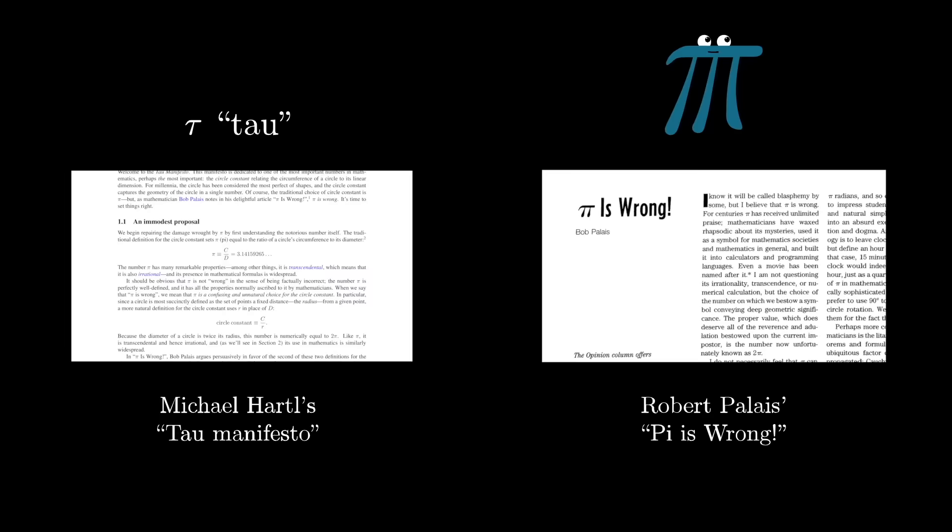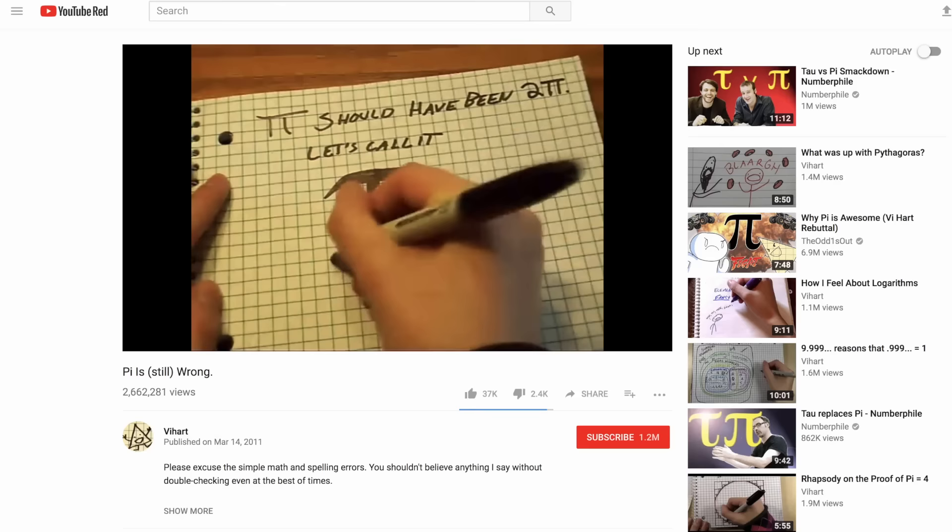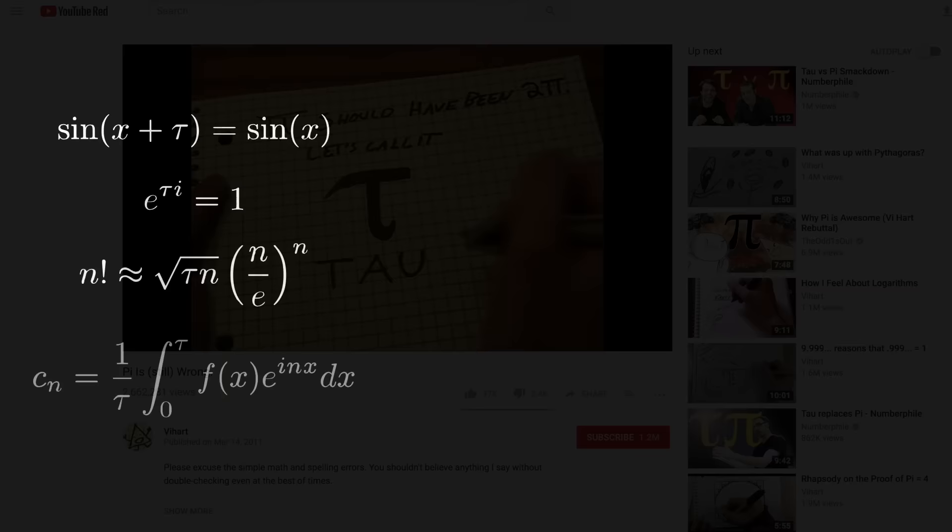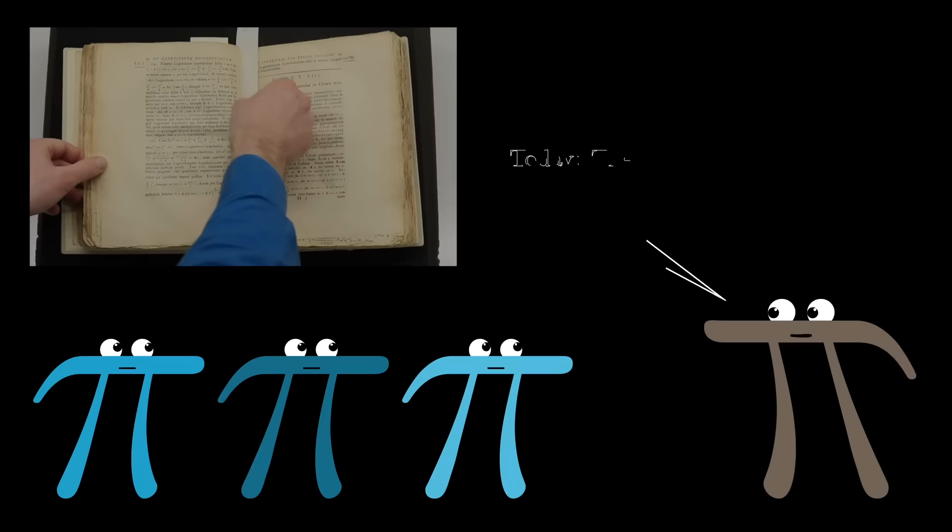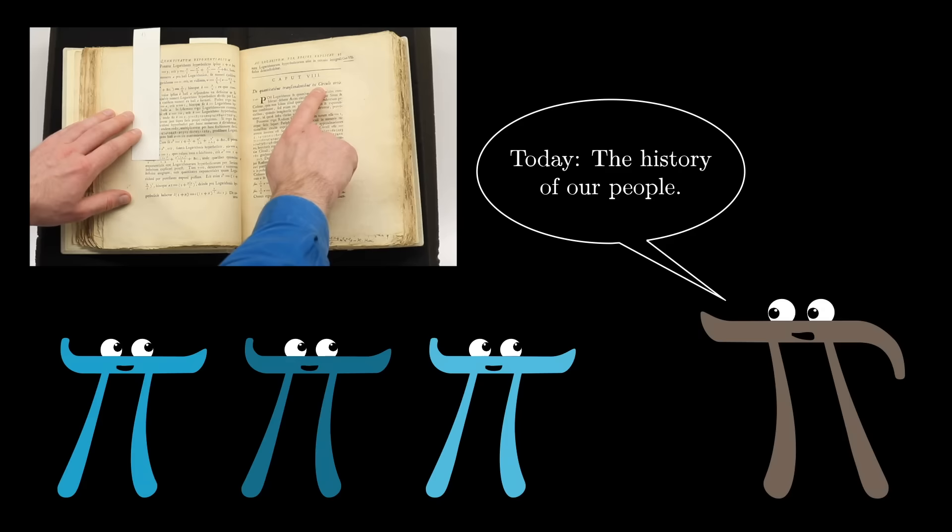These days we often call that larger constant tau, popularized by Michael Hartle's Tau Manifesto, although personally I'm quite partial to Robert Palais's proposed notation of a pi with three legs. In either of these manifestos, and on many places on the internet, you can read to no end about how many formulas look a lot cleaner using tau, largely because the number of radians describing a given fraction of a circle is actually that fraction of tau. That dead horse is beat, I'm not here to make that case further.